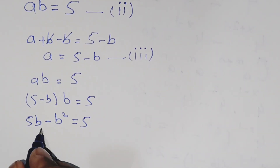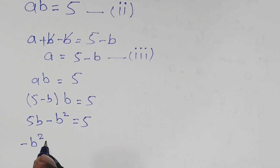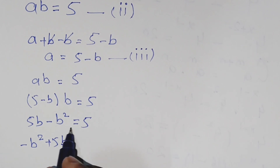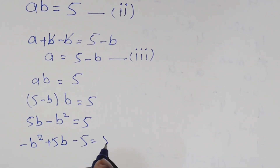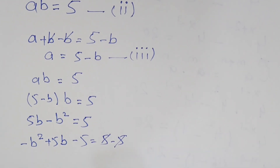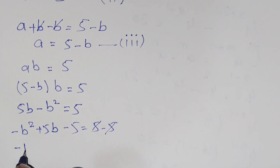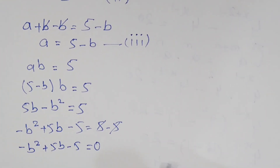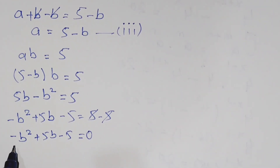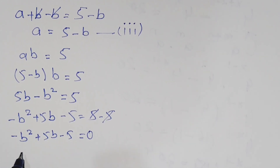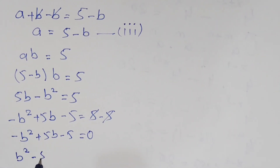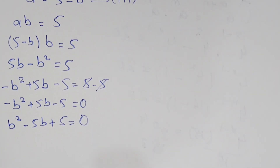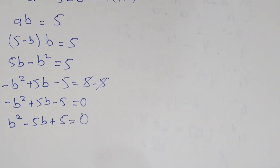Now we rearrange. Subtracting 5 from both sides: negative b squared plus 5b minus 5 equals 0. We then multiply both sides by negative 1, so our equation becomes b squared minus 5b plus 5 equals 0.